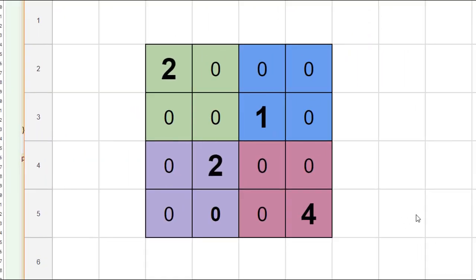Now we want a systematic way for the computer to go through each of the squares and try different numbers. We're going to start at the first zero and work our way left to right and then top to bottom — the same way that you read a book.